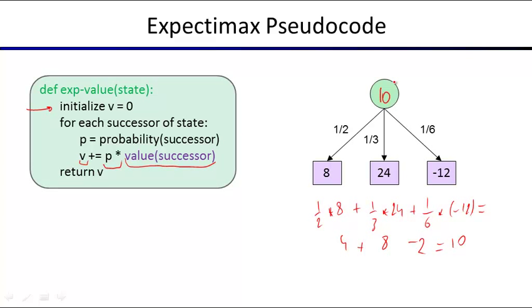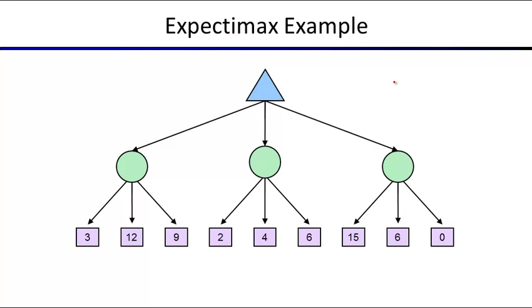Once we know how to do it for one of these nodes, we can repeat it everywhere and compute the value of these trees. Here's a spelled-out version of the computation.